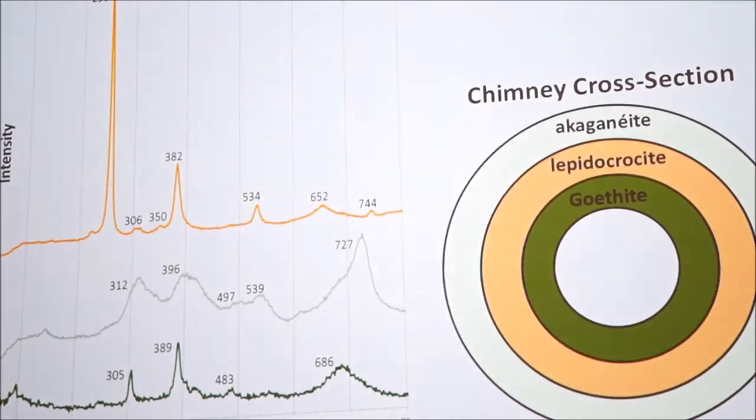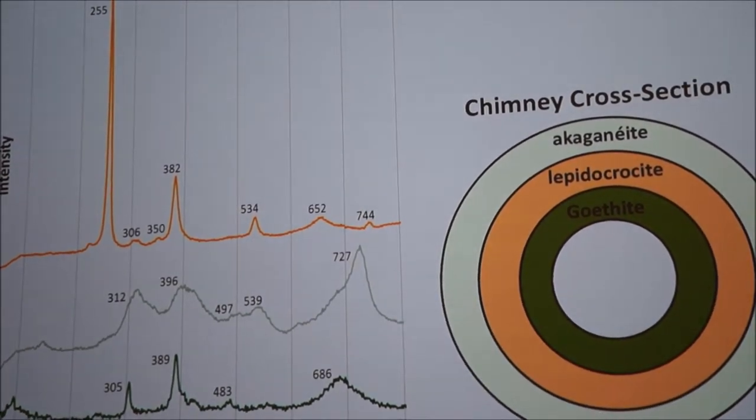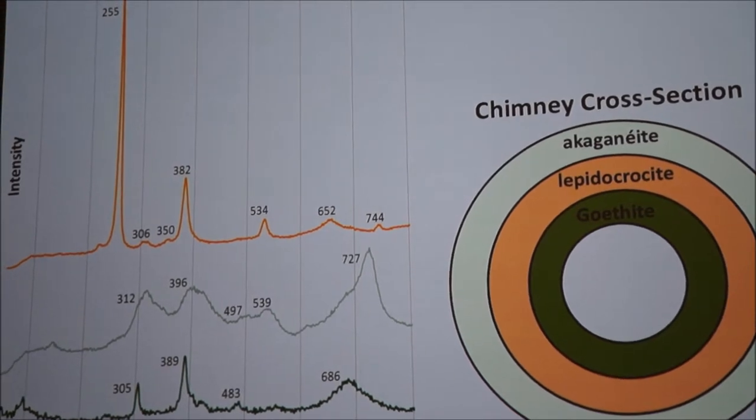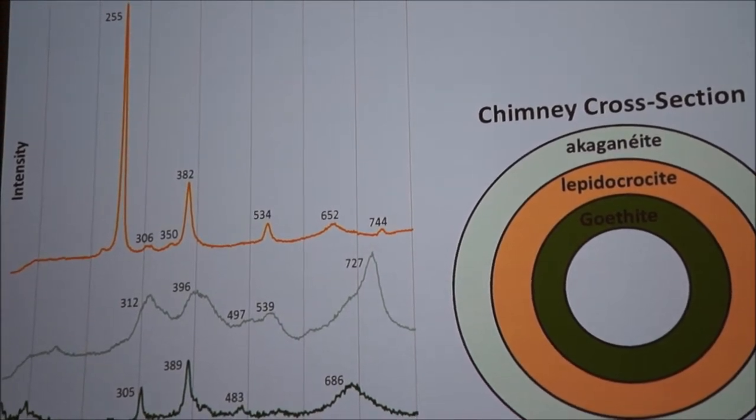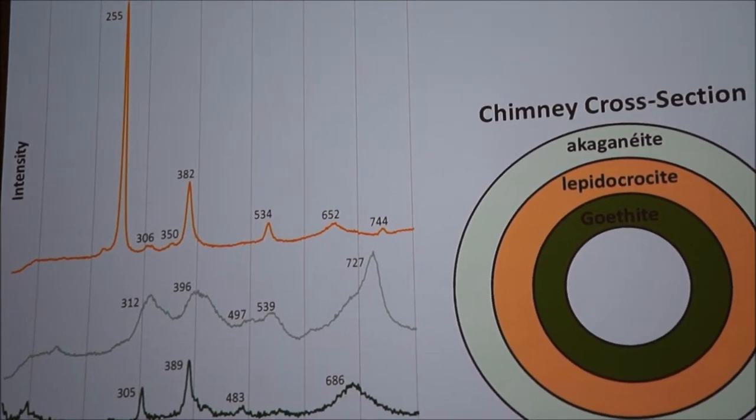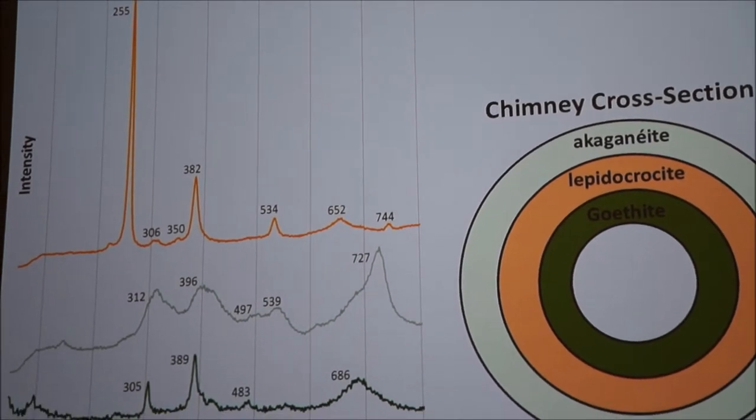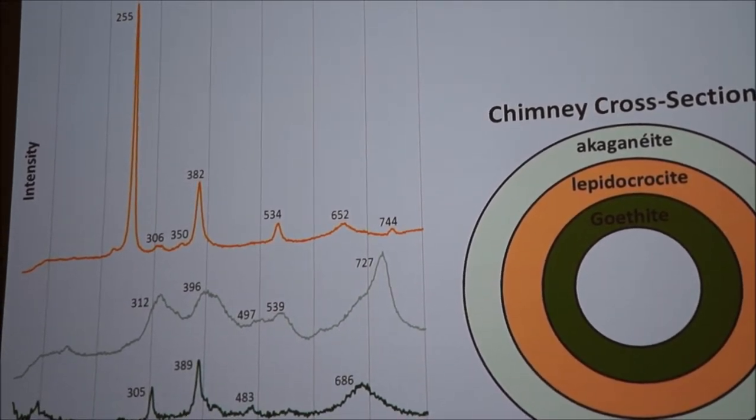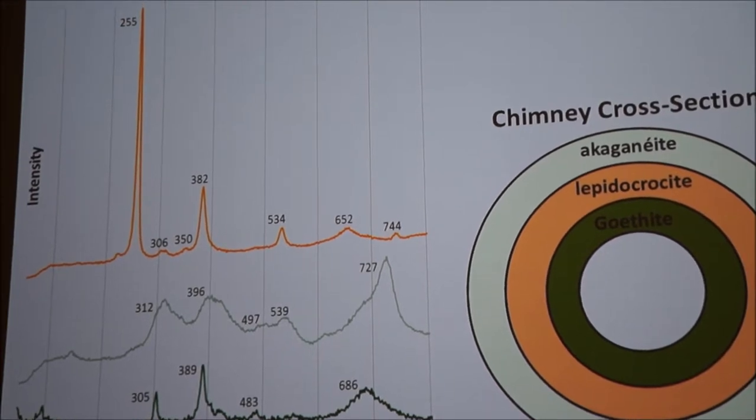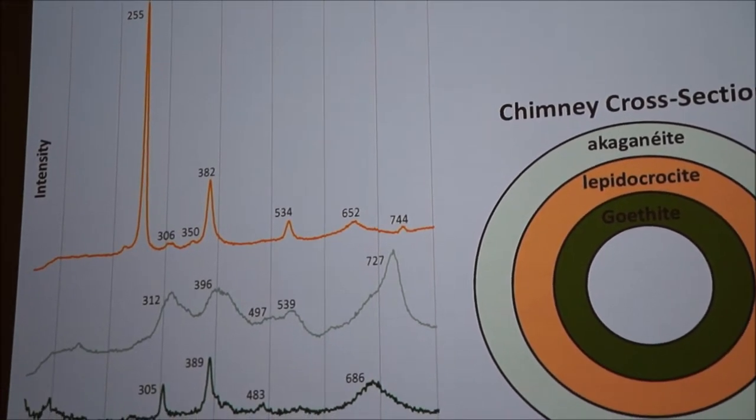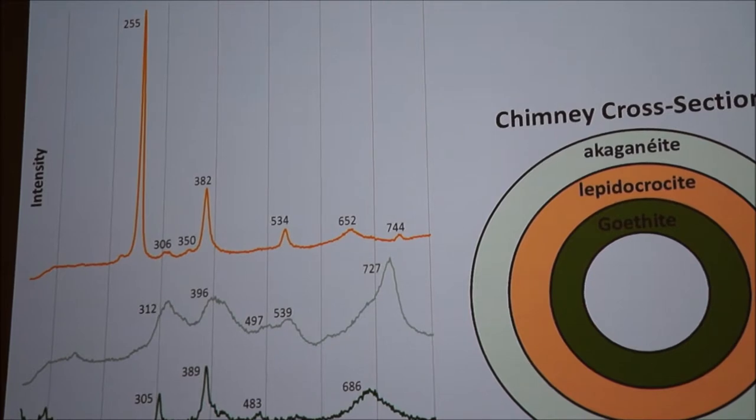As far as the mineralogy of the chimneys, the entire thing is composed of magnetite, pretty much magnetite everywhere. But then also iron oxyhydroxides. And there are three different polymorphs of iron oxyhydroxide: akaganeite, lepidocrocite, and goethite.